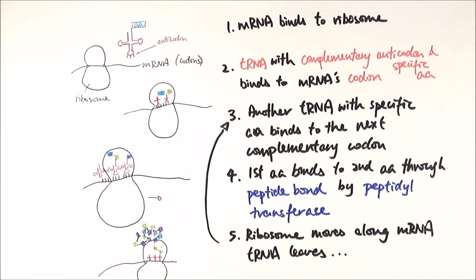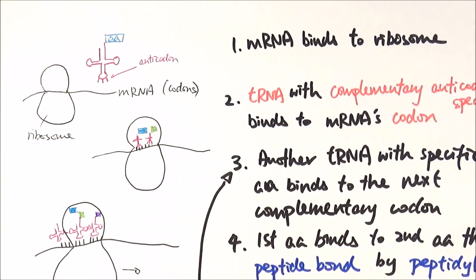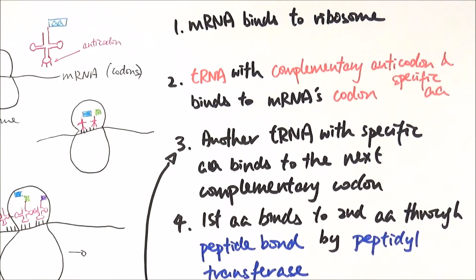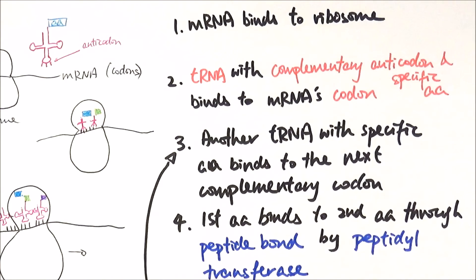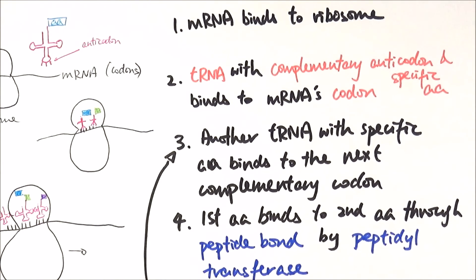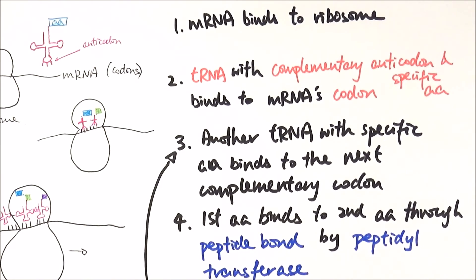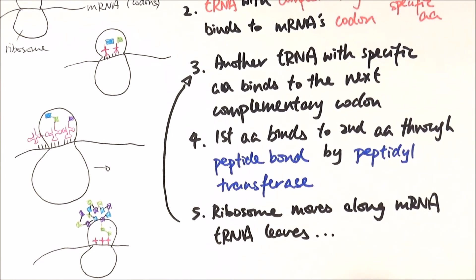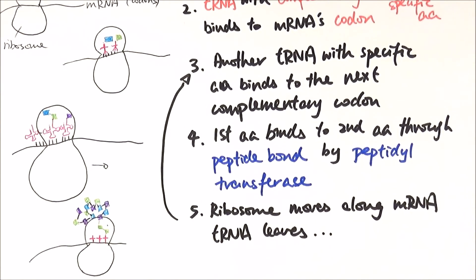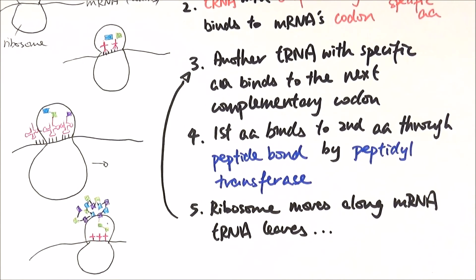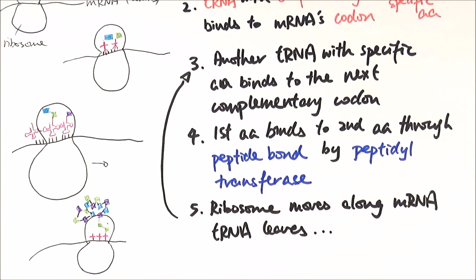Here's a quick recap. First, mRNA binds to the ribosome. Then a tRNA with a complementary anticodon and specific amino acid binds to the mRNA's codon. Another tRNA binds to the next complementary codon. After that, the first amino acid binds to the second amino acid through a peptide bond, catalyzed by peptidyl transferase, an enzymatic component on the ribosome.